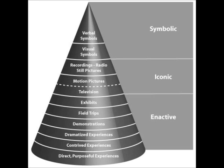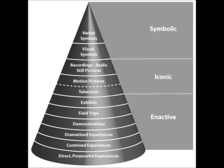The first category human beings encounter is that of symbolic learning. This includes verbal and visual symbolism. In layman's terms, this level of experience involves reading, seeing, and hearing information. This category is the most abstract and is also the level on which the learner is the most passive.